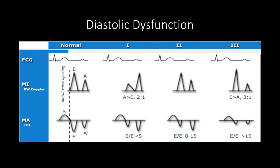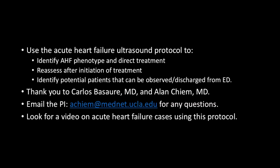Unlike systolic function, which typically does not change in acute heart failure, diastolic function does change in real time. If you give a preload reducer and/or diuretics, you can expect the diastolic function to improve. This is why diastolic assessment is so powerful in estimating the severity of acute heart failure as well as response to therapy.